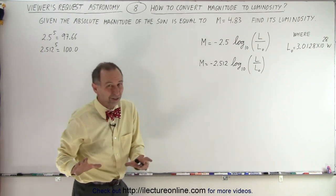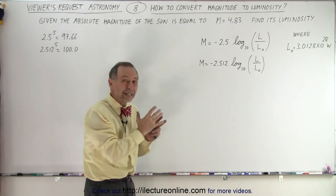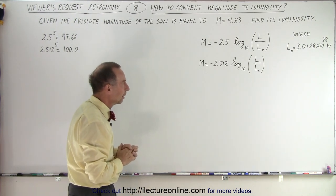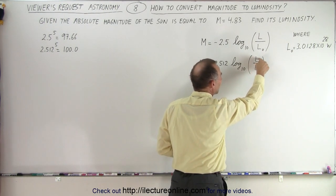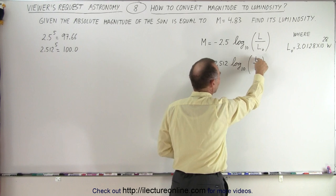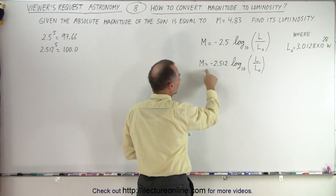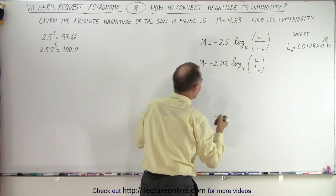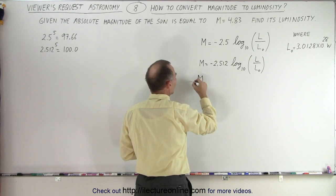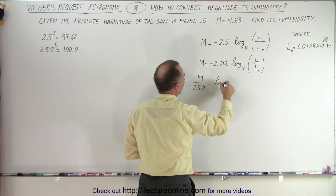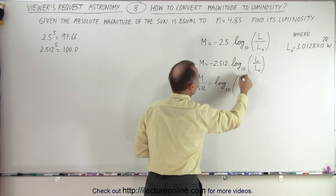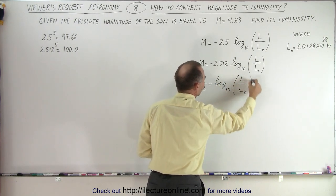So what we need to do now is, since we're looking for the luminosity, we have to solve this equation for L. So the first thing we're going to do is divide both sides by negative 2.512. So the magnitude divided by negative 2.512 is equal to the log base 10 of the ratio of L divided by L sub not.